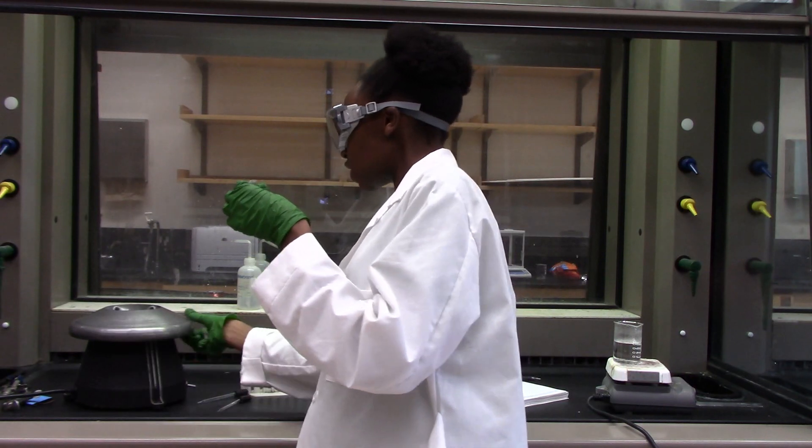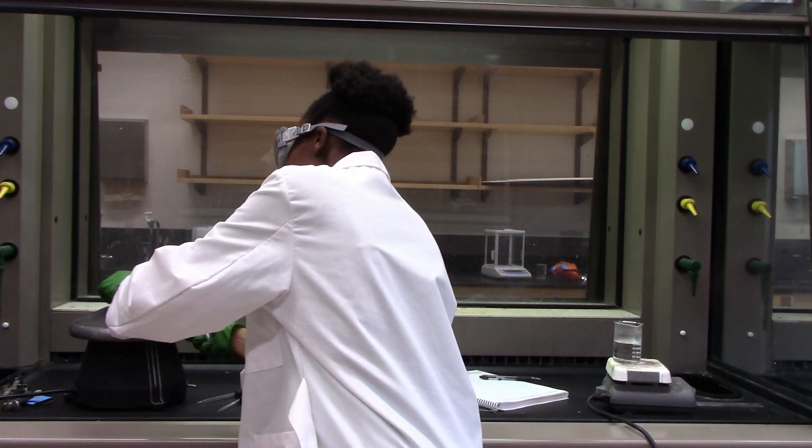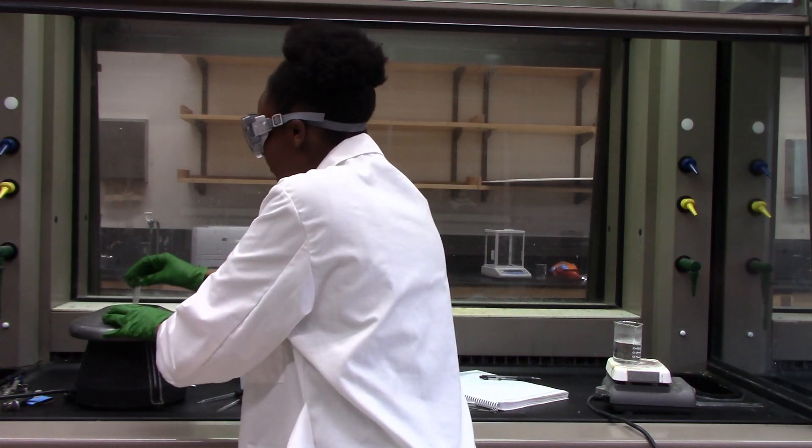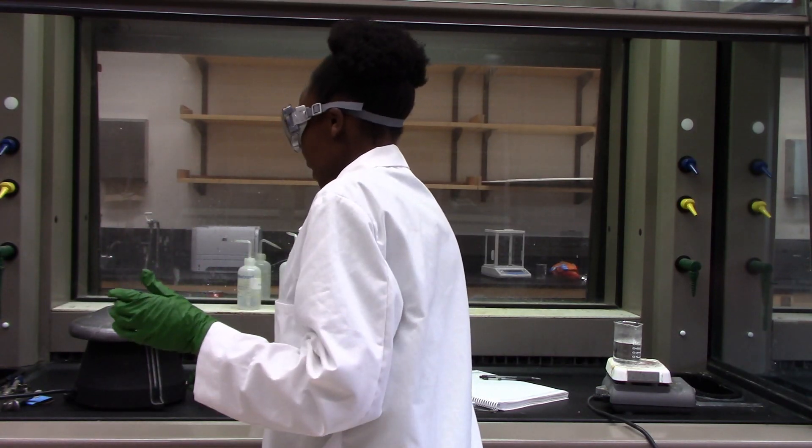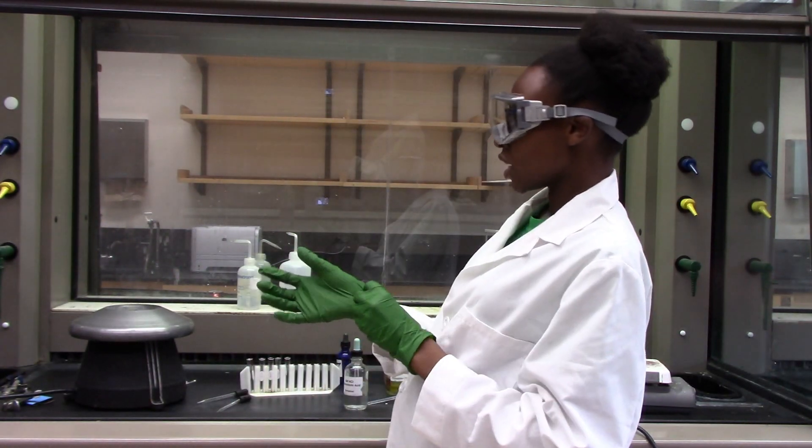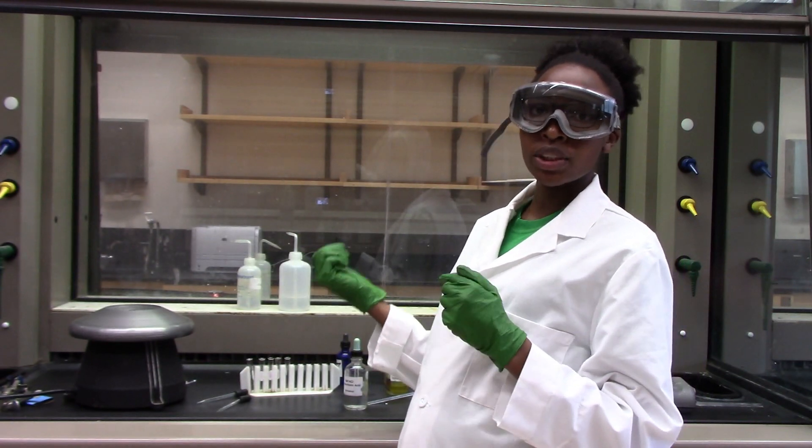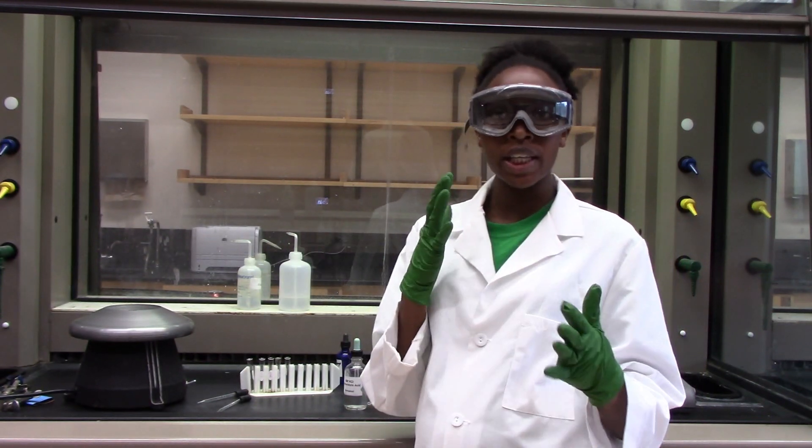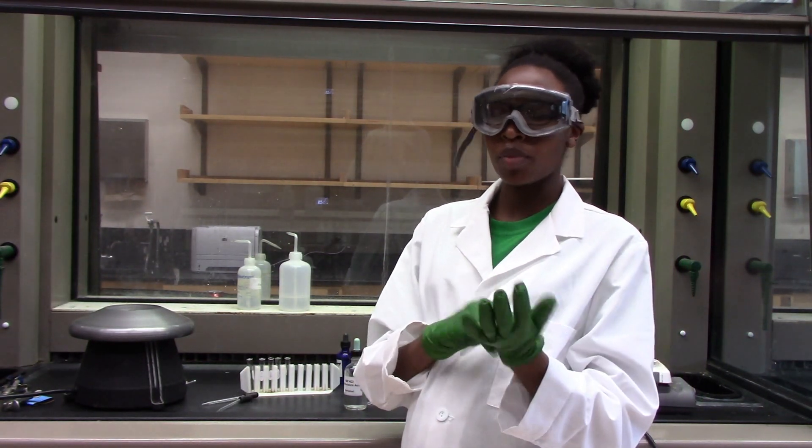I am using a stirring rod to mix and make sure that I have a uniform mixture. Then I will centrifuge. This is my centrifuge right here. I just put in and I balance it. The centrifuging should help us separate the precipitate from the supernatant.